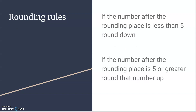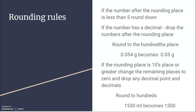If the number after the rounding place is less than five, we round down. If the number has a decimal, you drop the numbers after the rounding place. So if I'm going to round 0.054 grams to the hundredths place, the number after the hundredths place is four — less than five — so I just drop it. It becomes 0.05 grams.